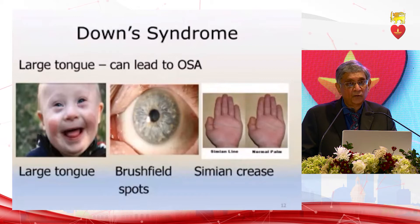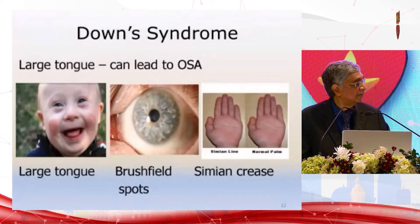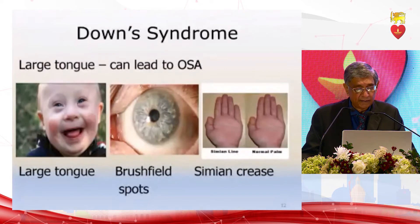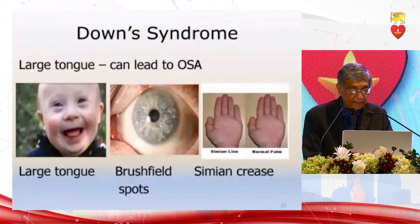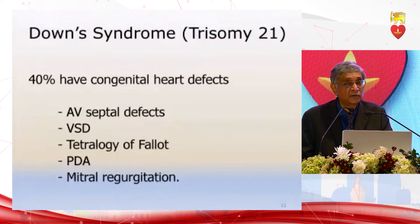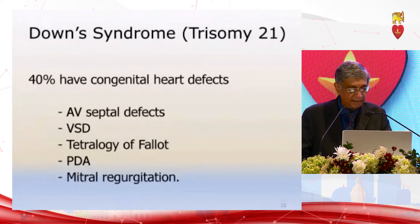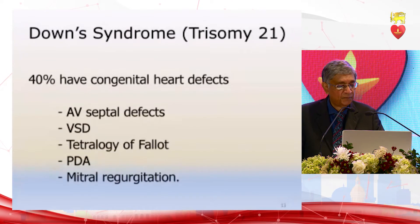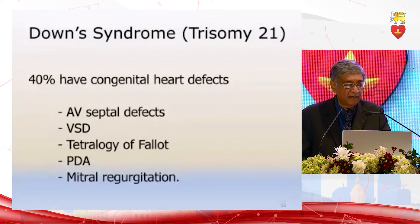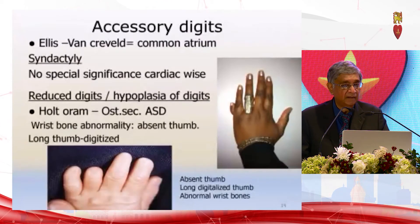Down syndrome: when you look at a child, the large tongue, Brushfield spots, peripheral gray spots around the cornea, and the simian single crease on the palm indicate Down syndrome, which is associated with trisomy 21. Forty percent of Down syndrome patients have congenital heart disease — AV septal defects, ventricular septal defect, tetralogy of Fallot, persistent ductus arteriosus, and mitral regurgitation. It is important that we recognize this.